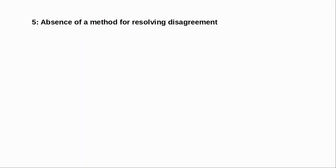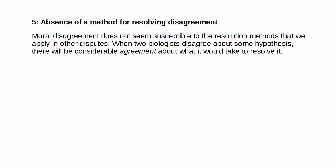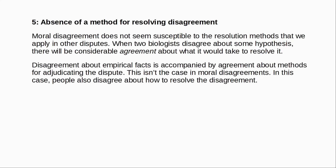A fifth argument from disagreement appeals to the absence of a method for resolving disagreements. On this view, it's not the mere existence of disagreement that creates a problem for realism, but the fact that we don't have a good method for resolving it. Intuitively, moral disagreement doesn't seem amenable to the resolution methods we can apply in other debates. Suppose two biologists disagree about whether a particular fossil hominid species is an ancestor of humans — there will probably still be considerable agreement about what it would take to resolve their disagreement. They will agree about what kinds of evidence would solve the dispute and how we should go about gathering such evidence. Although there is disagreement about what the empirical facts are, there is agreement about the methods for adjudicating empirical disputes.